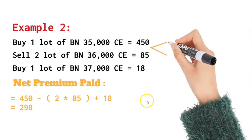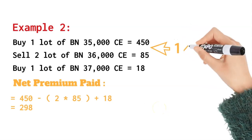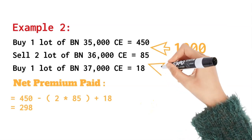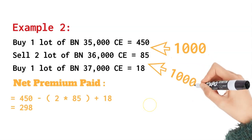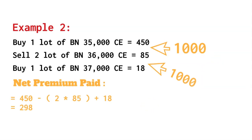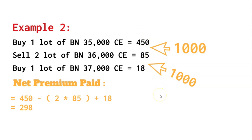As a buyer, you choose these strikes based on the chart, resistance levels, or where you'd be happy to book profit. There are various reasons to choose 2x, 3x, or 4x. At 4x, the OTM premium captured will be very less, meaning the premium you pay as a buyer won't come down by much. I typically choose between 2x and 3x, but you can play with 4x or 5x. You can also change the ratio to 1:3:2 by adding more lots to the defense in OTM.